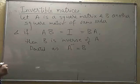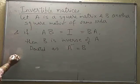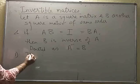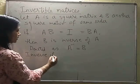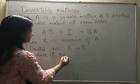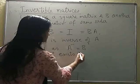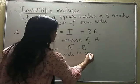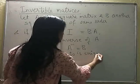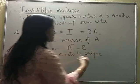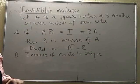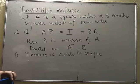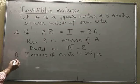Now, coming to the results related to invertible matrices. Firstly, the inverse, if it exists, is unique. It is not possible for one matrix to have two inverses — every invertible matrix will have exactly one inverse.